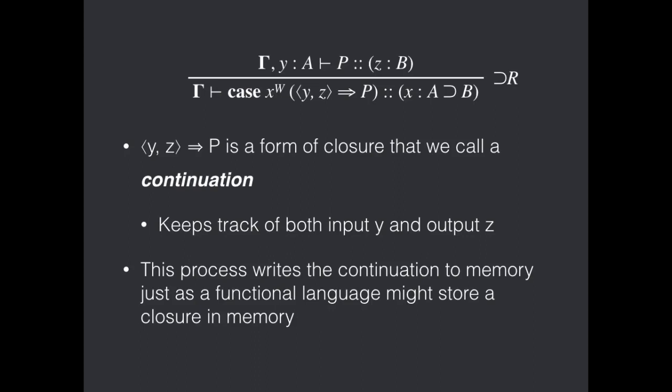And we can see over here the dual construct that writes that into memory. Here we use the same kind of case construct that we saw before in the case of reading for conjunction. But here we have the variable annotated with a W rather than an R. And the thing that this writes into memory is a form of closure. This brackets Y, Z goes to P. And this keeps track both of the input channel or input address Y and the output address Z. And this process doesn't do anything particularly complicated. It just takes that whole continuation, that whole closure, and writes it into memory in the same way that a functional language can store a function value in memory.